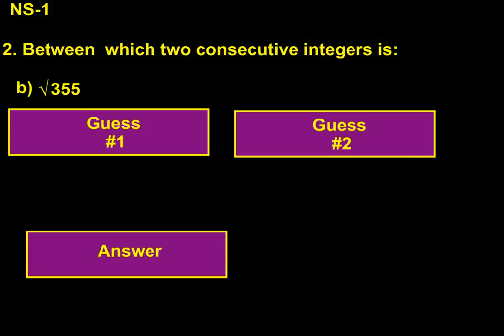Now let's take a look at 2b. Here we have the square root of 355. Well, thinking back to what we had done before, I know 10 times 10 equals 100, but that's nowhere near close enough. And I know 20 times 20 equals 400, which seems a touch high.